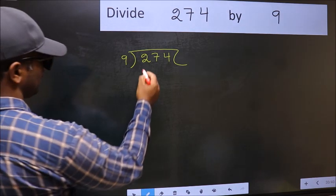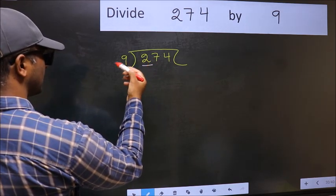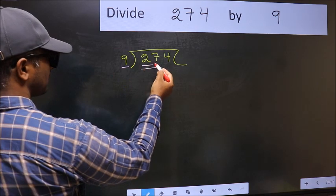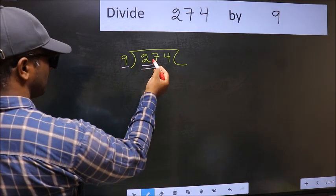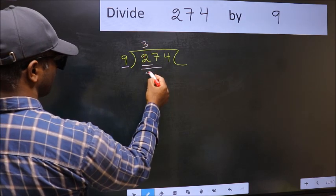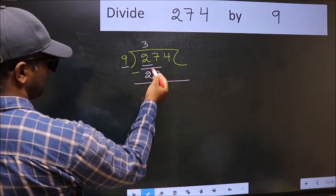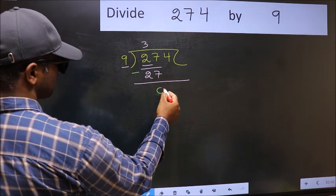Here we have 2 and here 9. 2 is smaller than 9. So we should take two numbers, 27. When do we get 27 in 9 table? 9 threes 27. Now you should subtract. 27 minus 27 is 0.